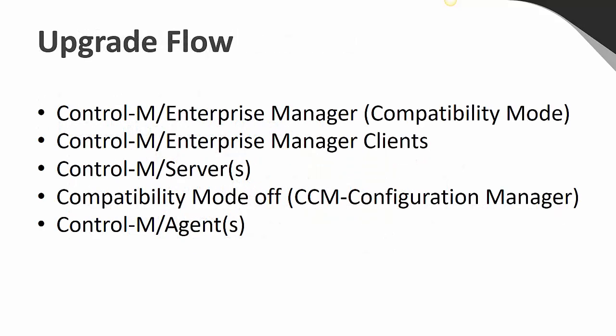At a high level, the typical flow of a 9.18 in-place upgrade or migration has changed slightly. First, you start with the Enterprise Manager Server. After that upgrade completes, EM is now in what's called Compatibility Mode, and older Control-M clients that were not upgraded can still work with the upgraded EM Server. Next, you upgrade the EM Clients — the new features of 9.18 are disabled in Compatibility Mode, but you can still connect, and clients can upgrade manually or with client distribution. Next, move on to the Control-M Servers, which need to be elevated in Enterprise Manager once upgraded. When ready, you can turn off Compatibility Mode in the CCM (Control-M Configuration Manager) to take full advantage of all the new features of 9.18.